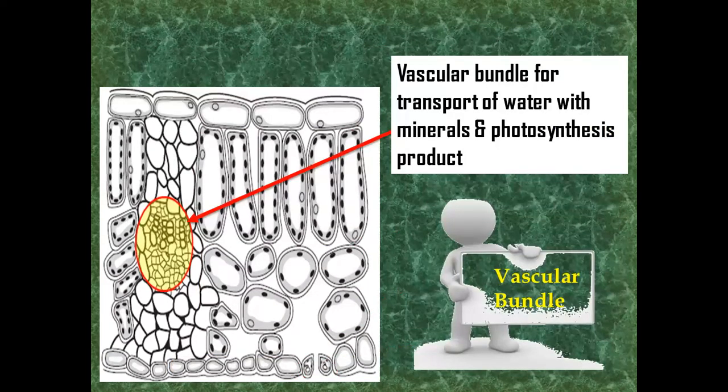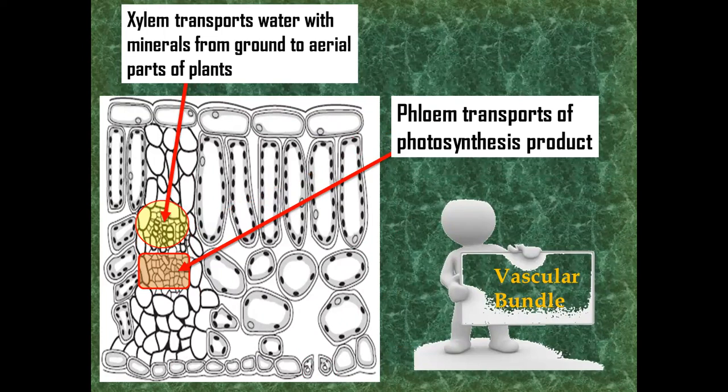Next, we have the most important part in the bifacial leaf, that is, vascular bundle. This vascular bundle is for the transport of water and minerals and for the photosynthetic product. We can see this vascular bundle is divided into two parts. One part is above, these are the xylem cells. These xylem cells transport water with minerals from the ground to the aerial parts of the plant. While the lower part of this vascular bundle is phloem. The phloems are living cells, and they transport the photosynthetic product. When the plant performs photosynthesis and produces starch, this starch is converted into sucrose, and this sucrose transfers to phloem. The phloem transports it to the area where it is stored or is being used.